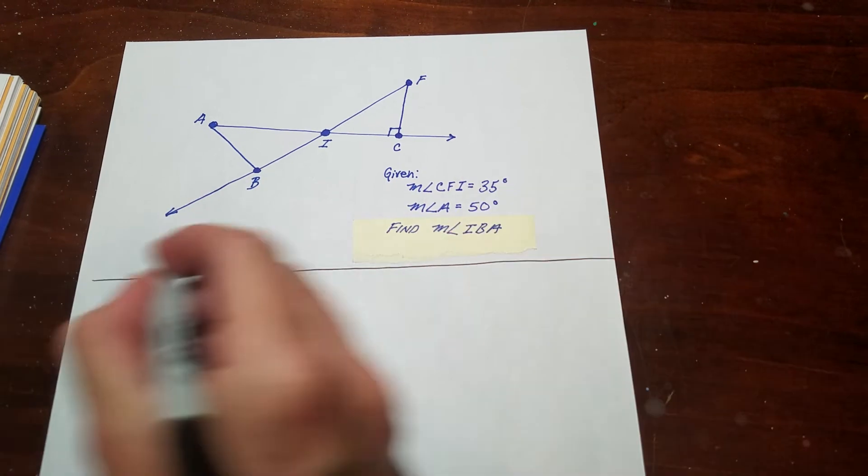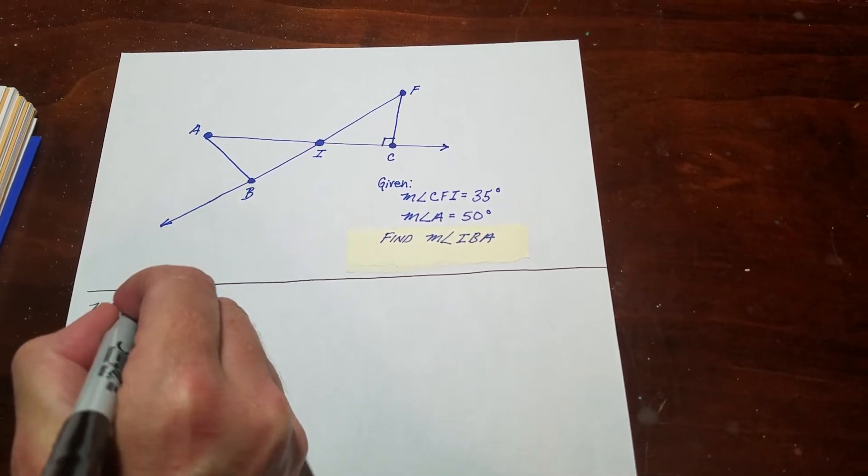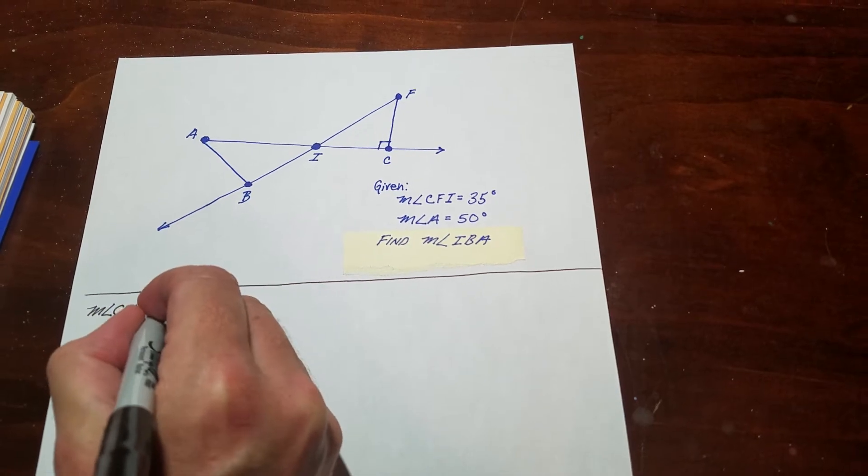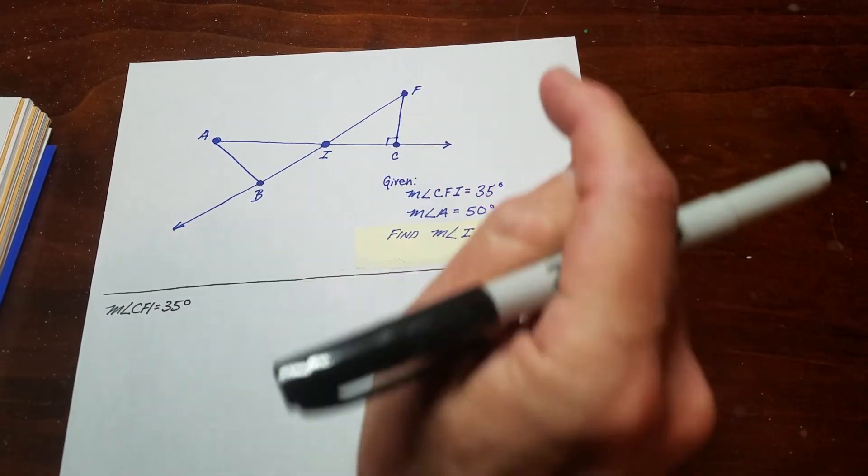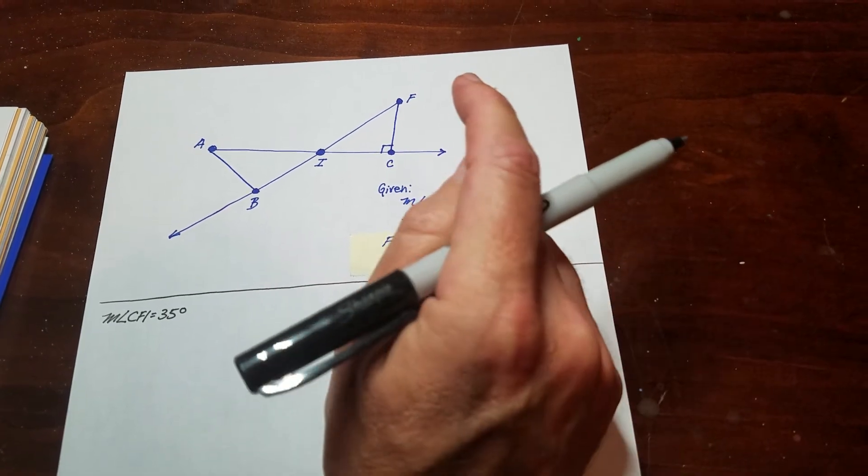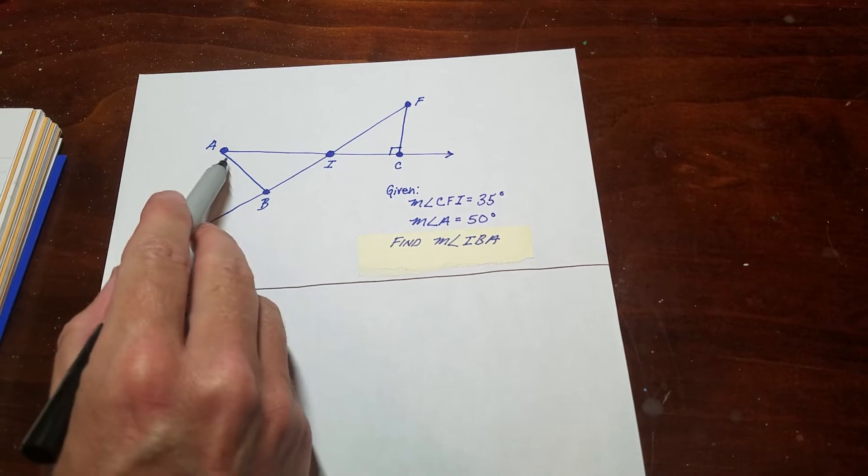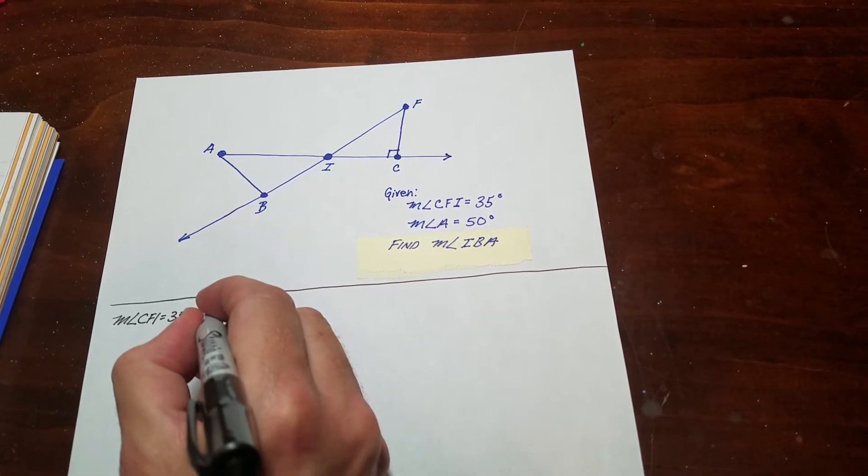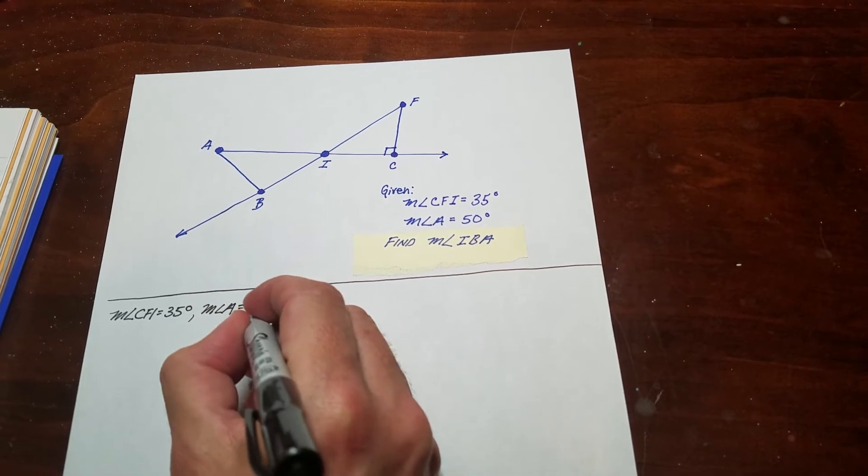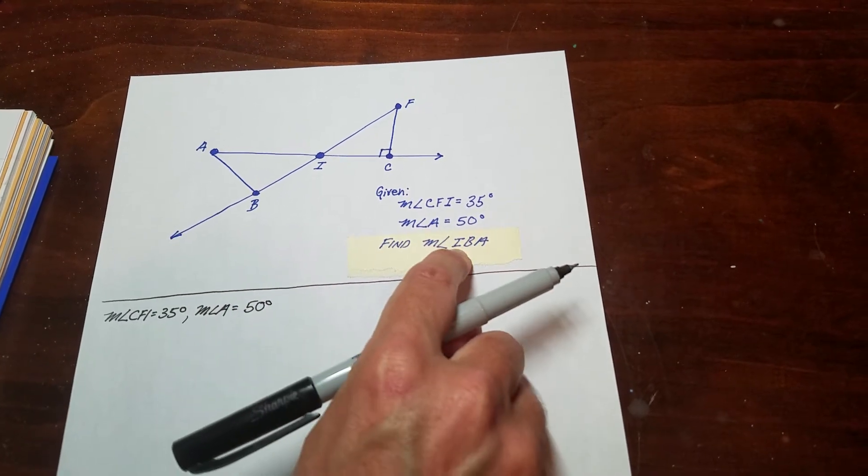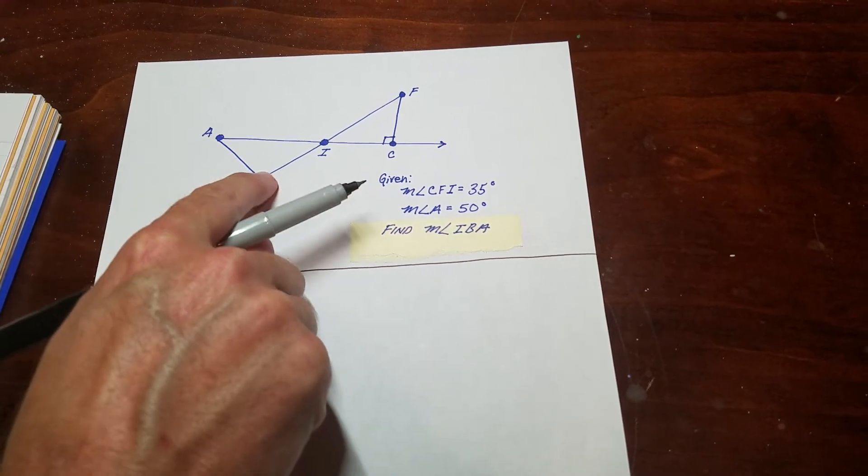My givens are this angle here. The angle CFI equals 35 degrees. CFI is actually up here. And then angle A, which is 50 degrees.